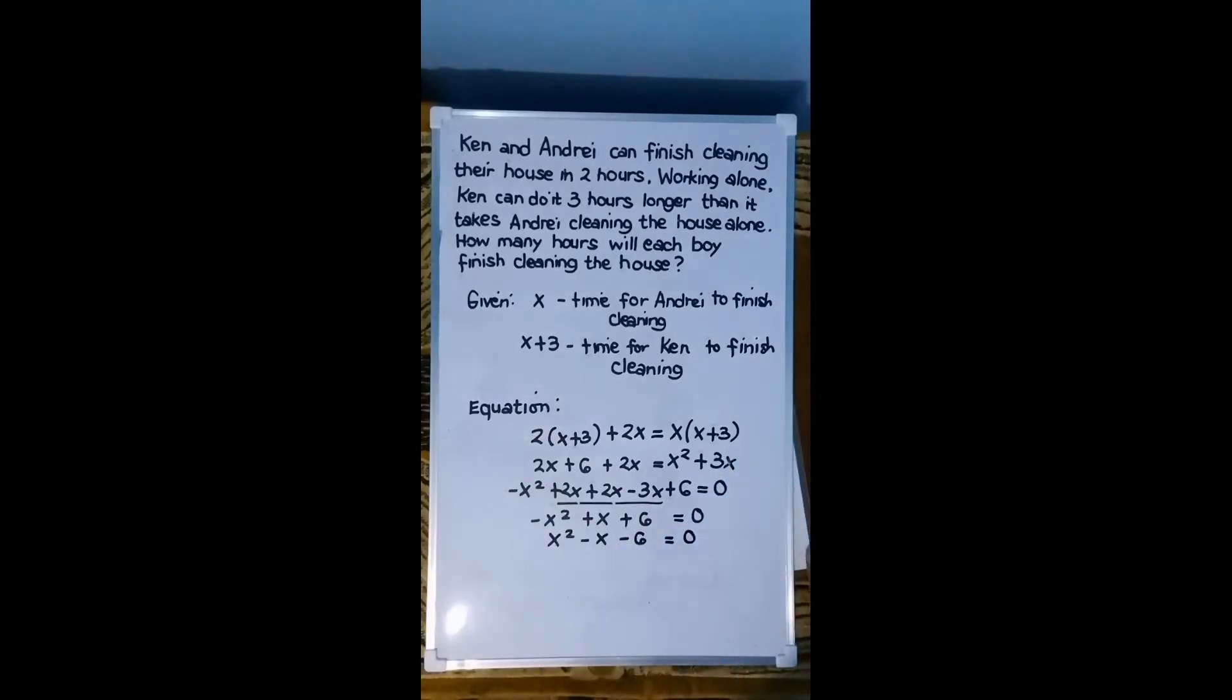So factoring. Using general trinomial, we have here X and X. Since negative 6, one factor is positive, the other one is negative. So we have here negative 3 and positive 2. Negative 3 plus 2 or 2 minus 3 is negative 1.